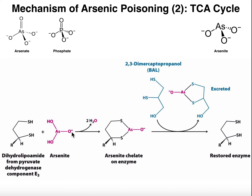This is called the arsenite chelate on the enzyme. Arsenic — even though it's technically a metalloid — is behaving here more as a metal. We say that this arsenic is chelated to the enzyme, and it's a very, very strong interaction — this isn't going anywhere. You could consider this suicide inhibition because it basically kills the enzyme's activity. And really, by killing the TCA cycle, if you have enough of this arsenite, you basically kill metabolism.